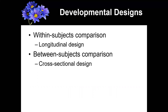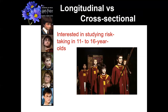A longitudinal design is like a within-subjects comparison because you're testing the same people multiple times at different ages, and a cross-sectional design is like a between-subjects comparison because you're testing different people of different ages. They both have their pros and cons, and it comes down to the nature of your research and what you suspect will be a confound. To clarify visually: a longitudinal design means testing Harry in years one, two, three, four, five — repeatedly. Cross-sectional means grabbing different people from different age groups and testing them all at the same time.